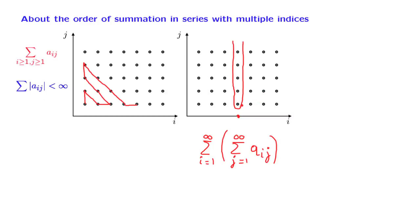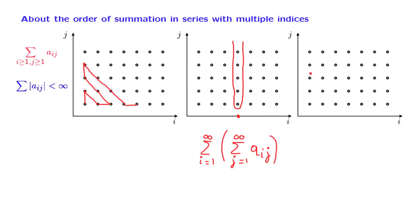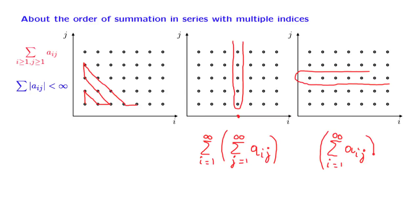Now, why start with the summation over j's while keeping i fixed? There's no reason for that. We could also carry out the summation by fixing a particular choice of j and summing over all i's, so i ranges from 1 to infinity. We obtain one such infinite sum for every choice of j, and then we add over all different possible values of j as j goes from 1 to infinity. This is a different way of carrying out the summation.